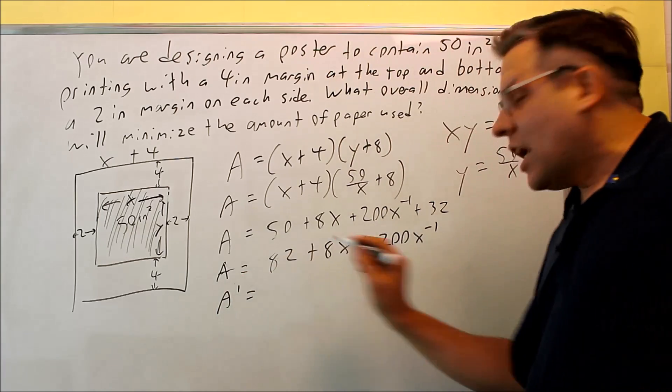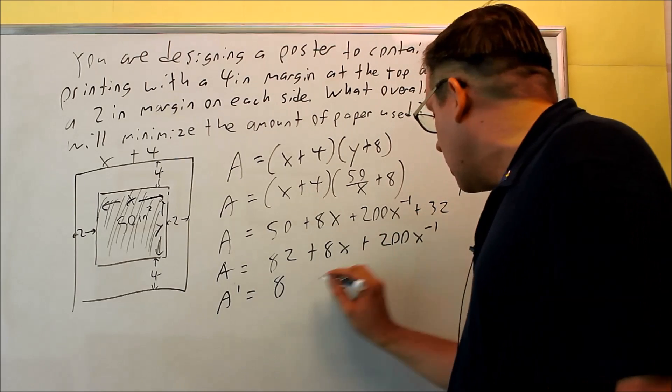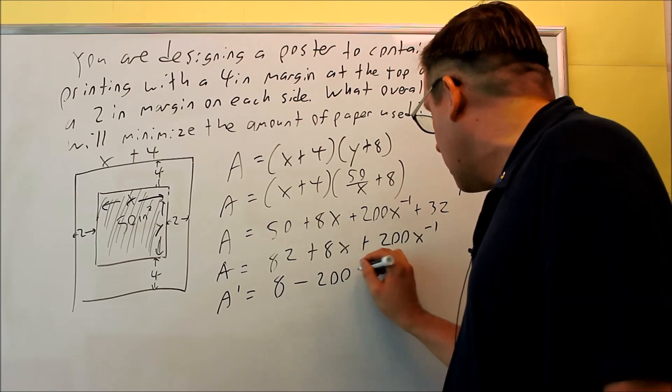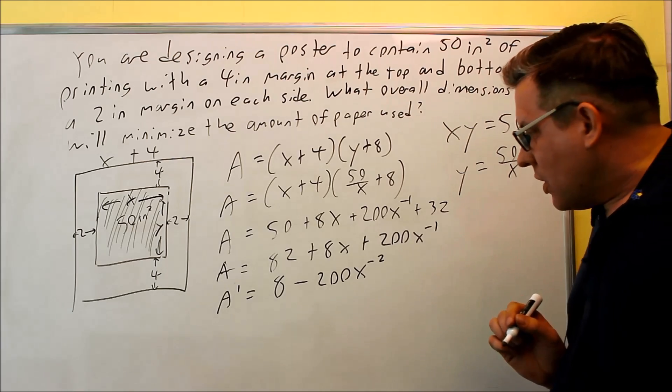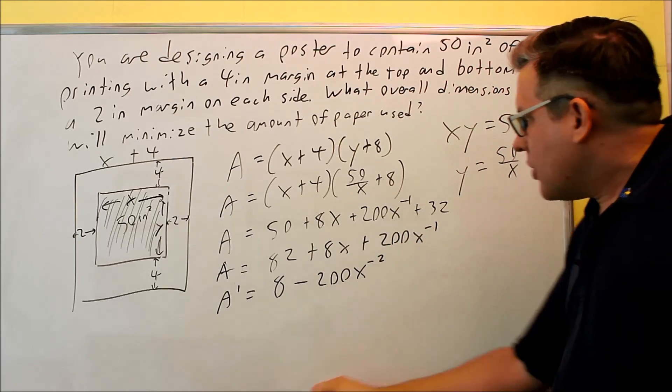So when I do the derivative, 82, the derivative is 0. I get 8. And then this one here, I get minus 200x to the negative 2.